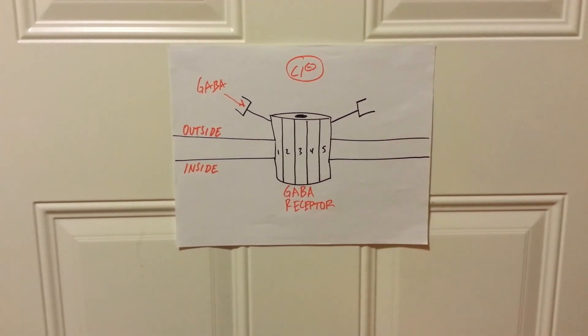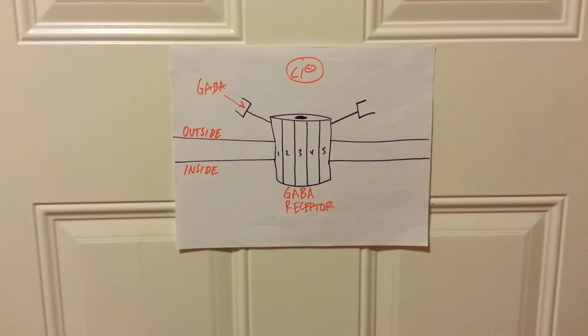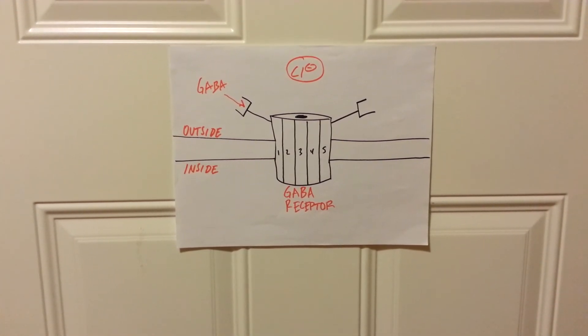This hyperpolarizes the membrane and causes an inhibitory mechanism to occur whereby no action potentials occur, or none of that anxiety, none of that panic attack is going to happen because these neurons are shut down.